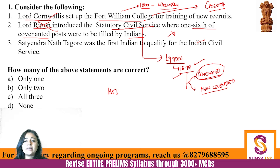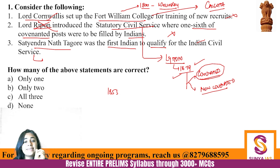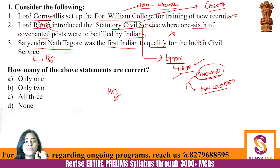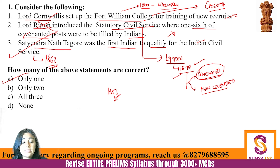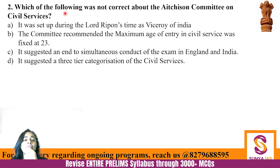The second statement is incorrect and the first is incorrect. Satyendranath Tagore was definitely the first Indian to qualify for the ICS. Open competition in civil services started in 1853, and Satyendranath Tagore was selected exactly 10 years later in 1863. Only the third statement is correct. Never confuse Satyendranath Tagore with Surendranath Banerji - Surendranath Banerji is famous for being the first person arrested under the sedition law.